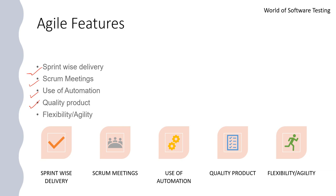The fifth and last agile feature is flexibility and agility — accommodating changes in requirements due to volatile or changing requirements from the client. This is the most important feature of agile, as client requirements may change at any point in time, whether in the coding, testing, or production phase. We can accommodate all requirement changes within agile methodology. In summary, the five agile features are: sprint-wise delivery, scrum meetings, use of automation, quality product, and flexibility and agility.